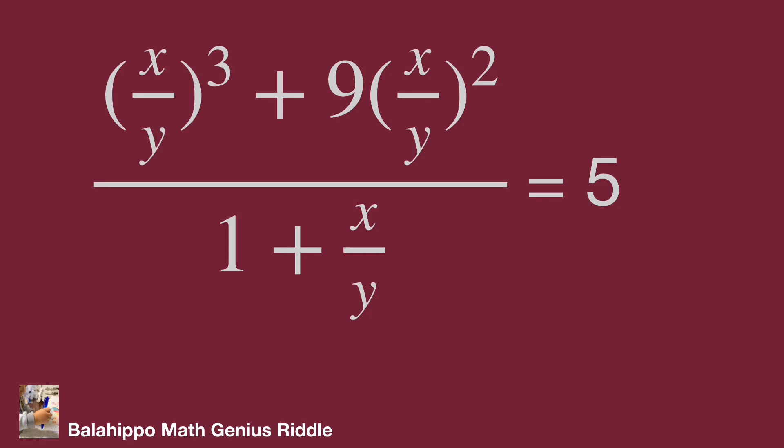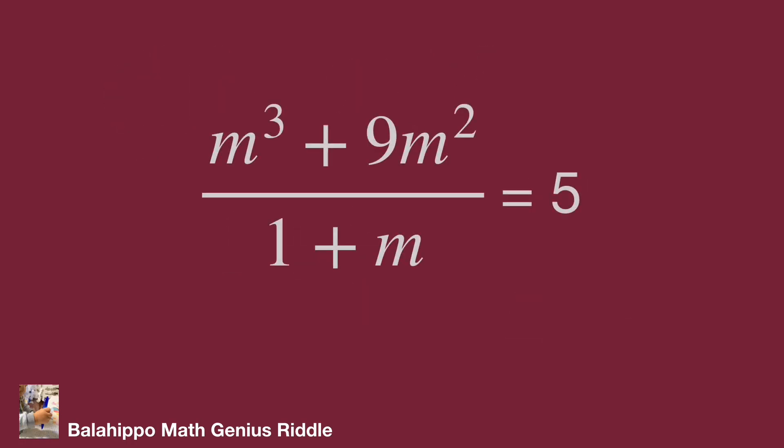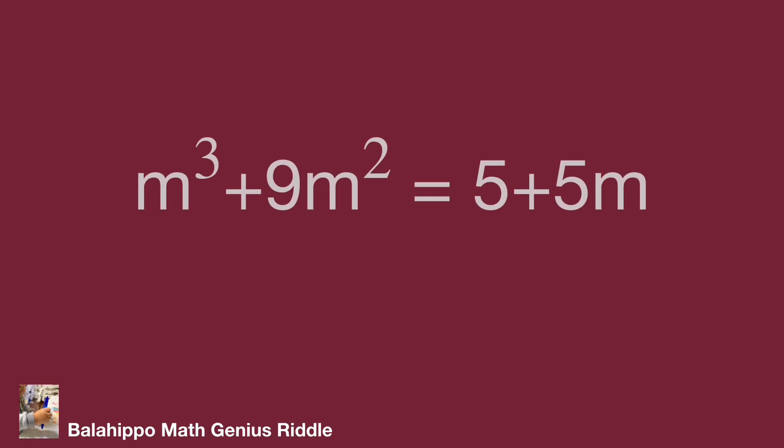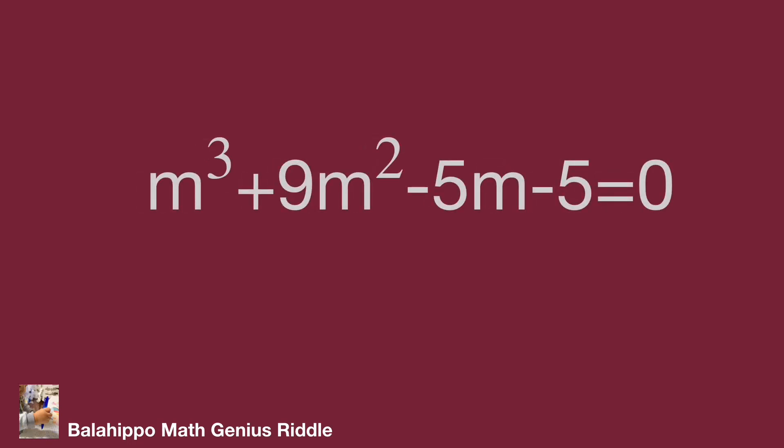For easier operation, let x over y equal to m. Substitute x over y by m in this equation. It becomes m cubed plus 9m squared over 1 plus m equals 5. Develop it as m cubed plus 9m squared equals 5 plus 5m. Move all the items to the same side of the equation: m cubed plus 9m squared minus 5m minus 5 equals 0.